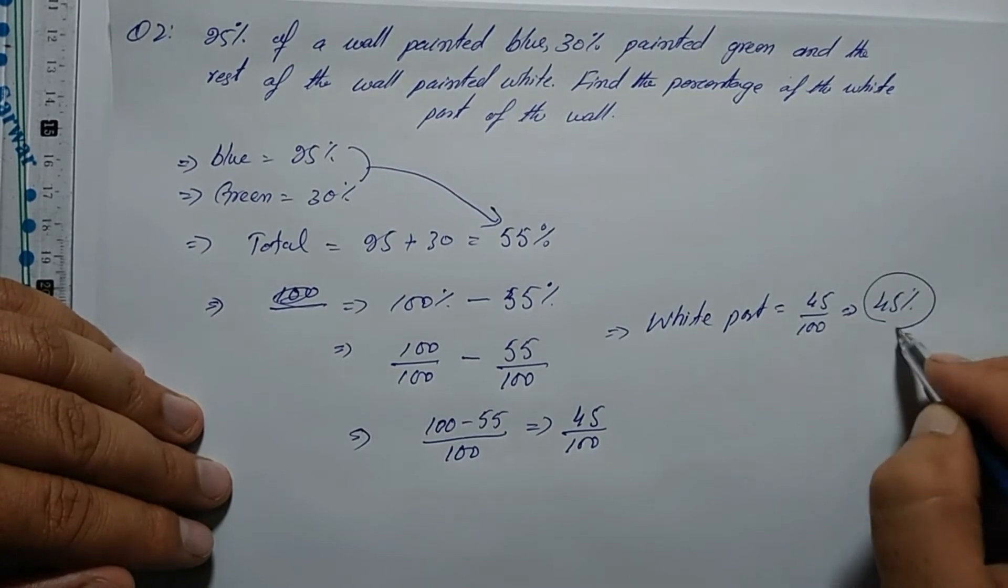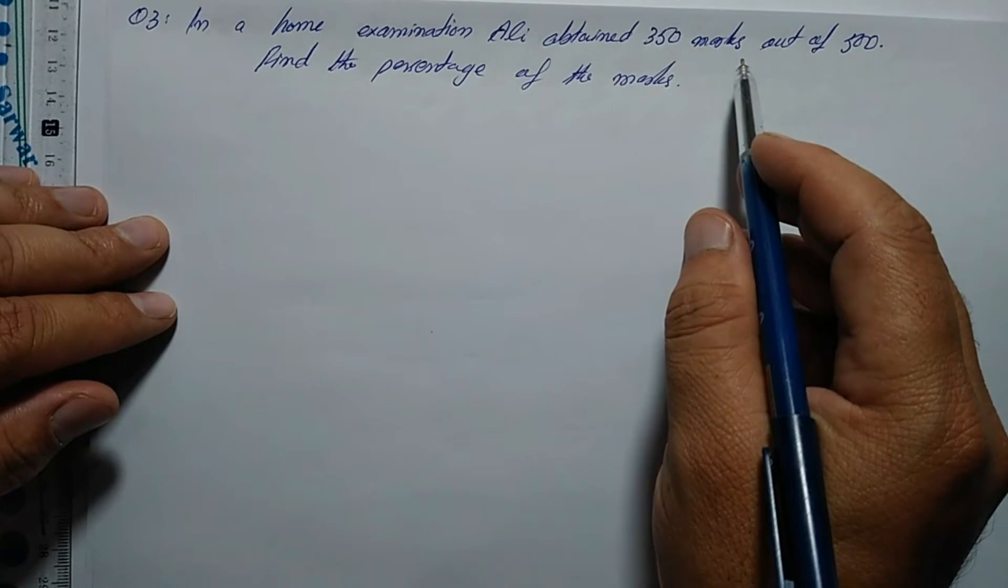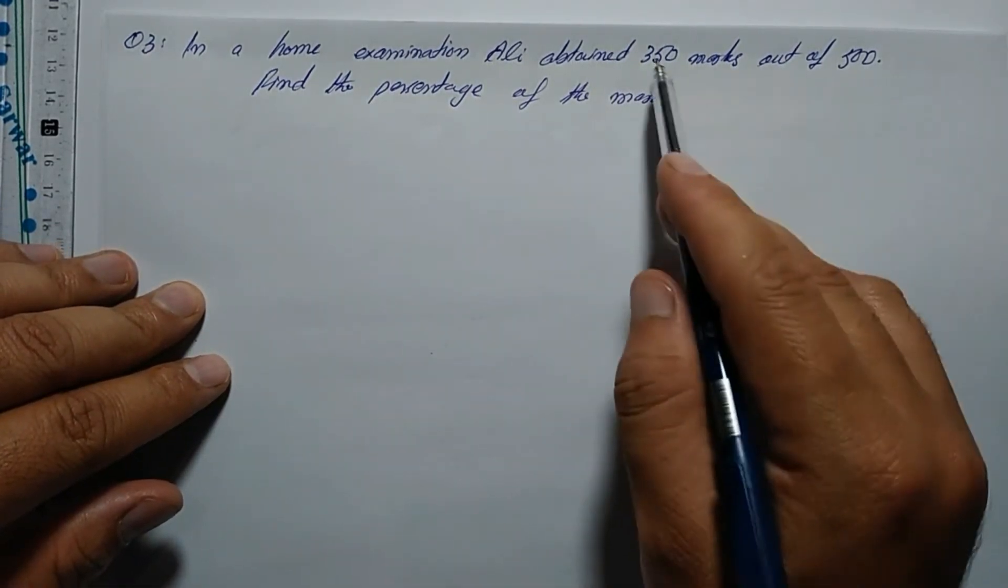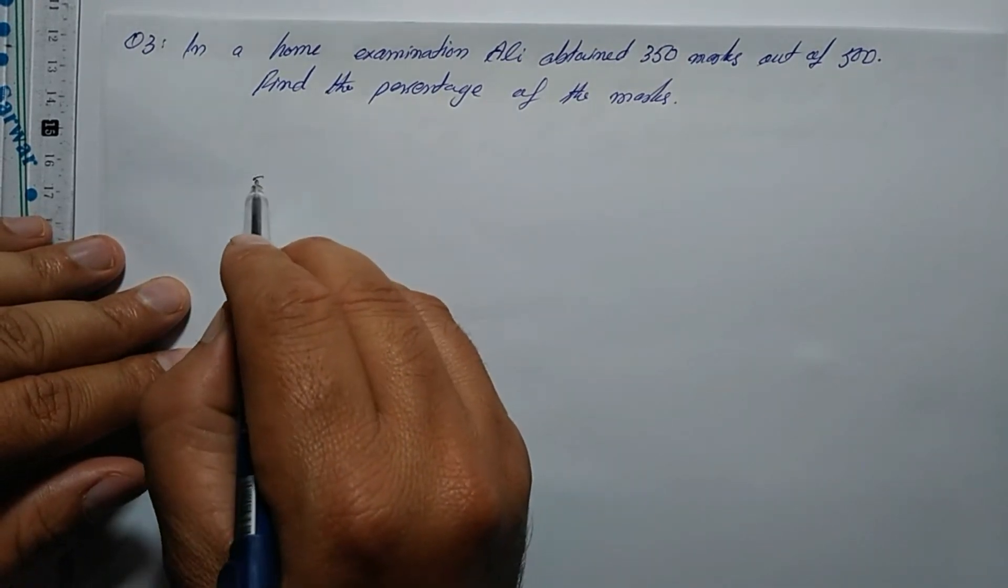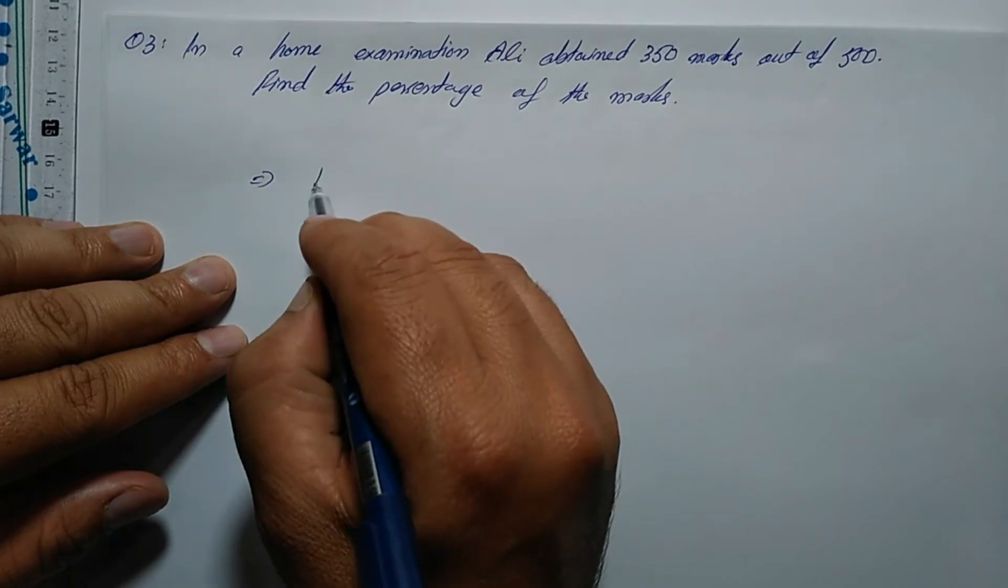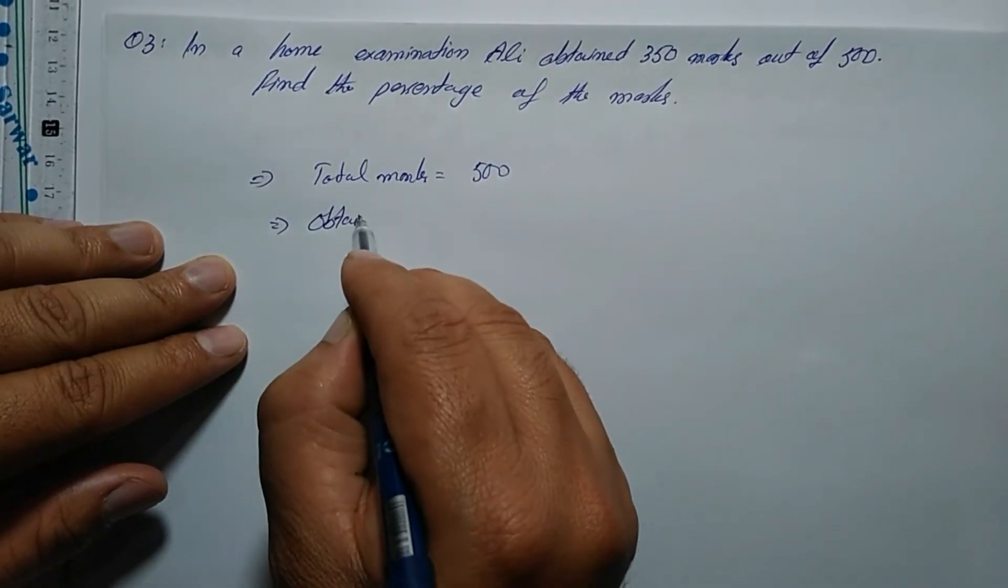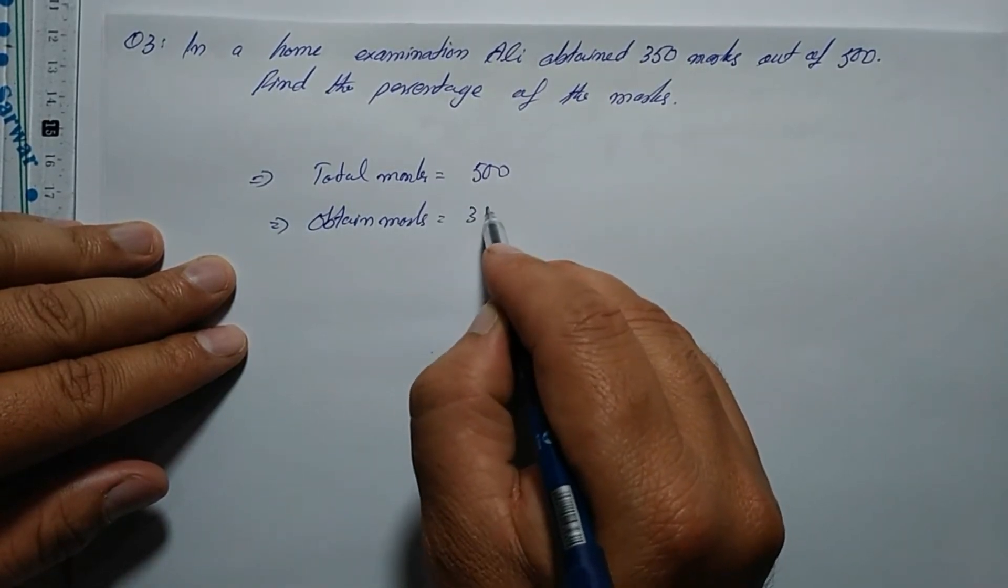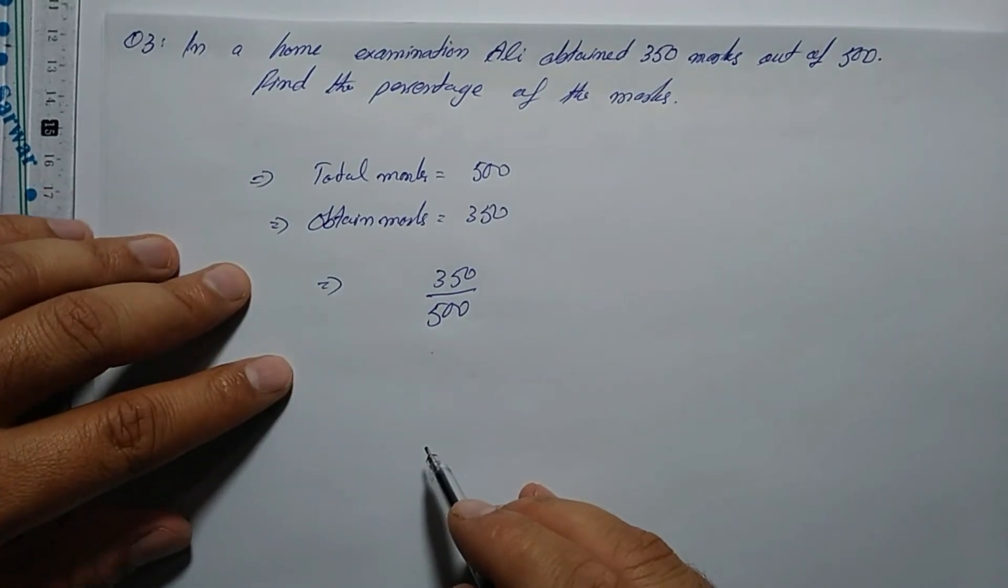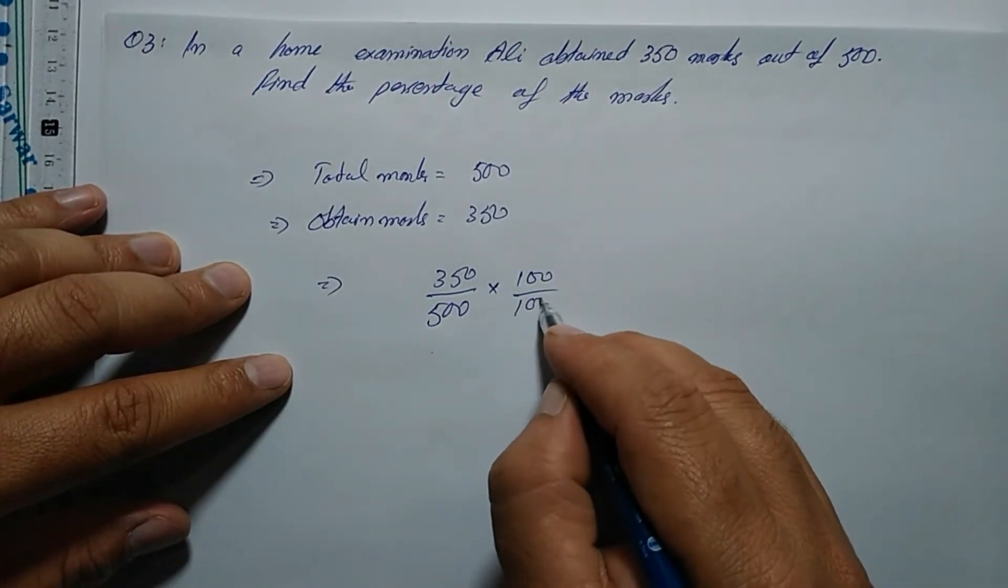Question number 3: Ali obtained 350 marks out of 500. Find the percentage of marks. Total marks are 500, obtained marks are 350. To convert to percentage, we multiply by 100.